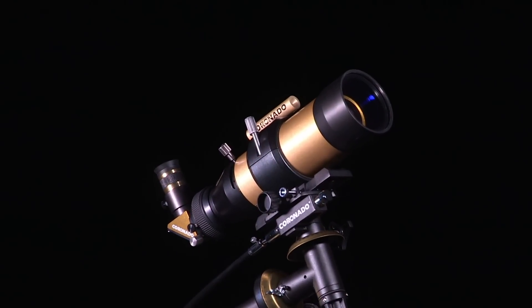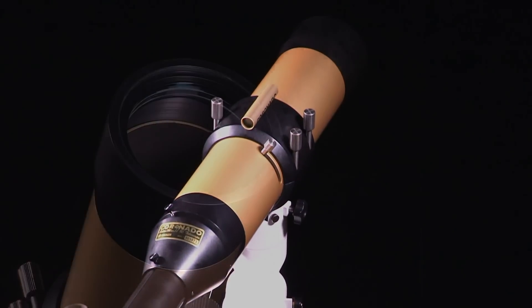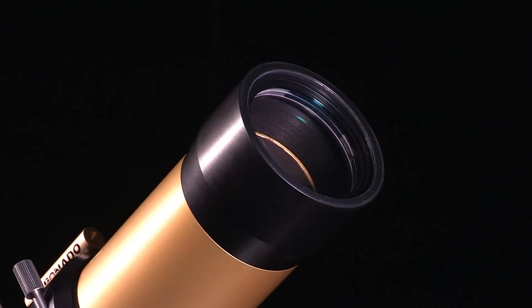Meade's Coronado SolarMax II comes in 60mm or 90mm apertures. These heavy-duty solar viewing scopes are the ultimate in solar observation.